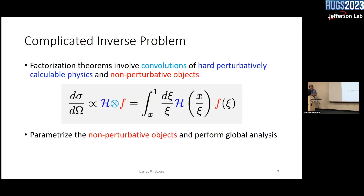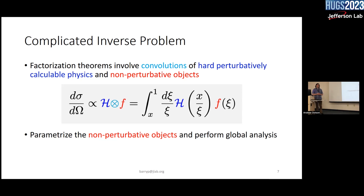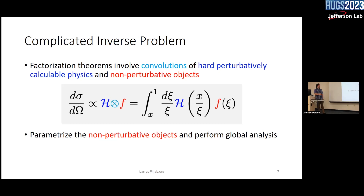Global analysis involves a complicated inverse problem. You can't simply grab the PDF directly from a single observable — you have a convolution where the observable sigma equals the hard part H, perturbatively calculable, convoluted with the soft non-perturbative object f. The integral runs from x to one of dz/z with the hard part and the PDF. This is a universal quantity, so we parameterize these non-perturbative objects with some functional form at a given scale.